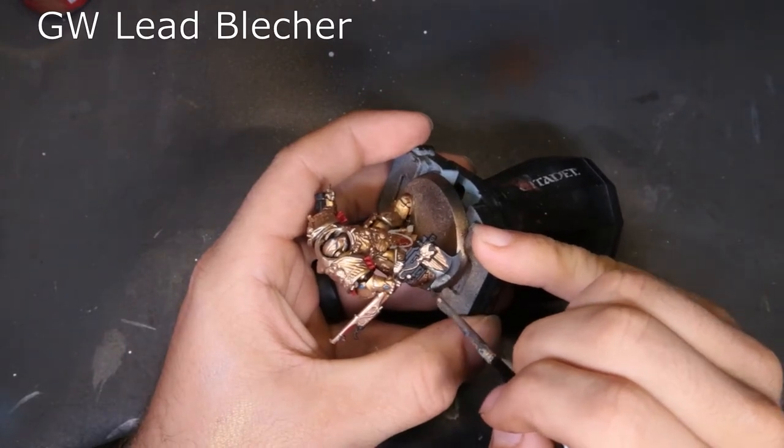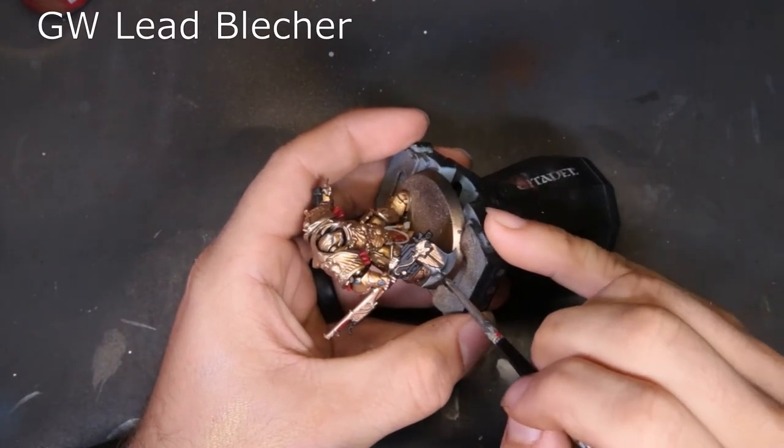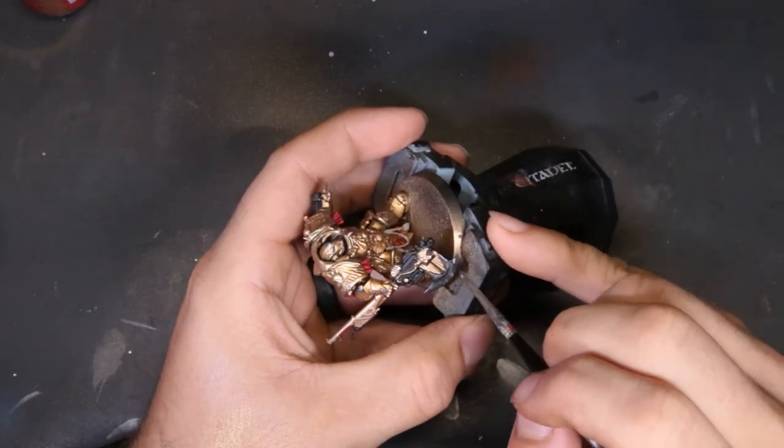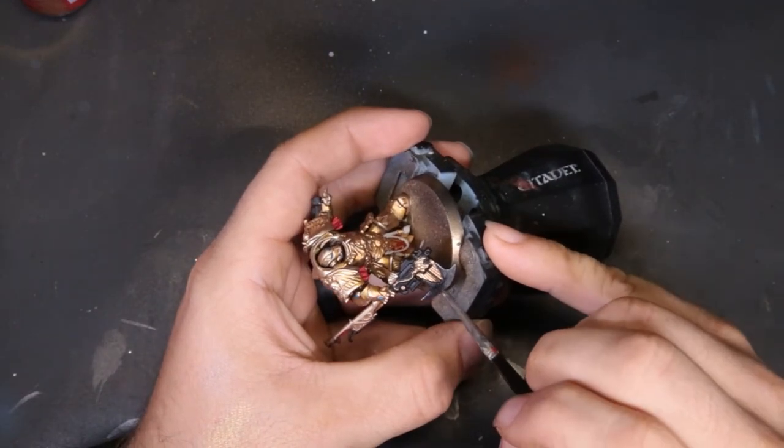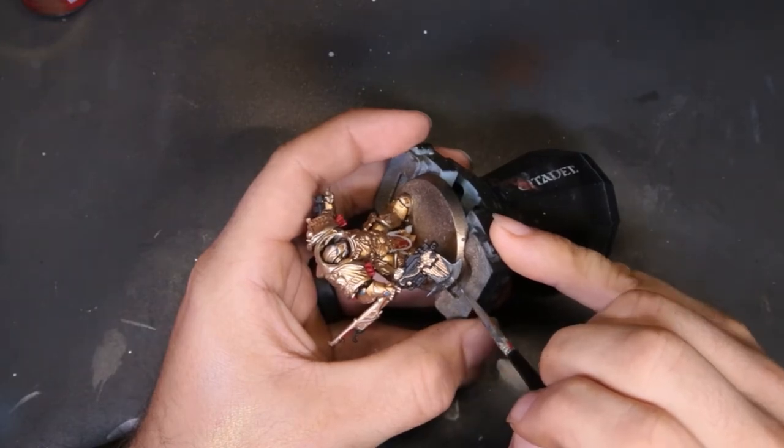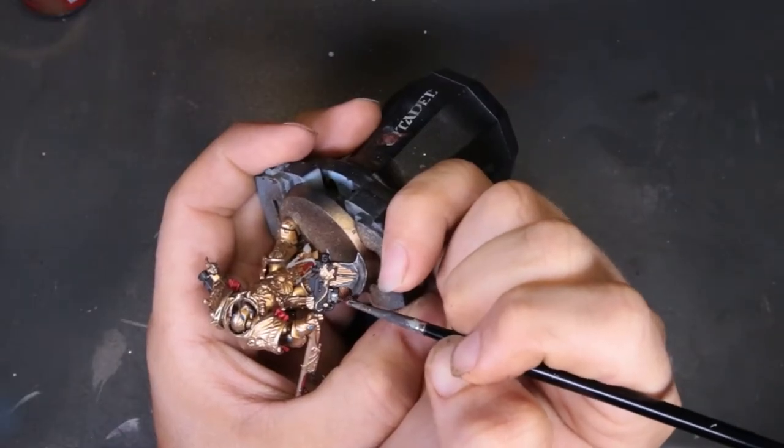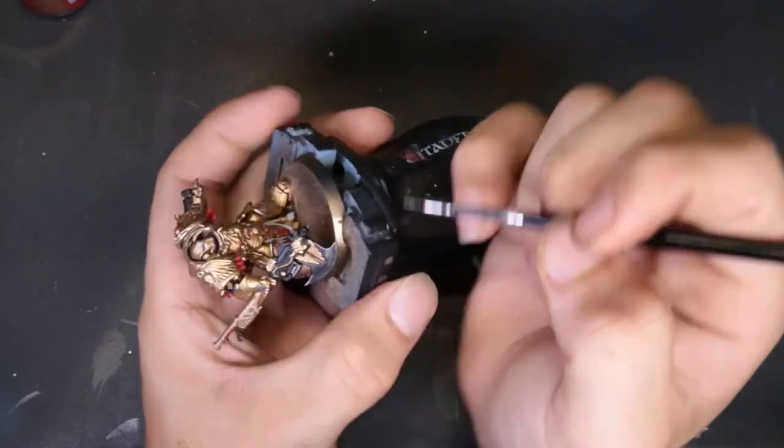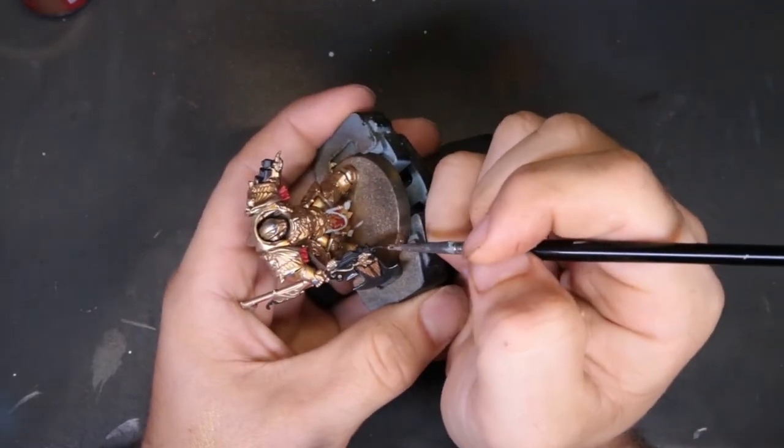Coming back to the metallics on the model, we come through with Leadbelcher. We're going to make sure we hit the blade to his axe here, all of his bolter components front and back, and then the little tubes on his chest that are coming around his shoulders and around his waist. Just want to make sure we pick these out now, that way they're squared away.